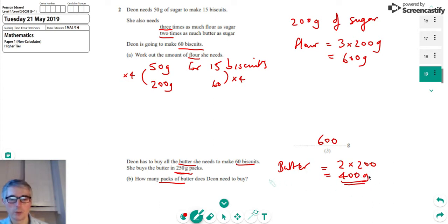Well, one pack would be 250, so that's not enough. We need more than that. So two packs, we can see, would be 500 grams, which would be enough. So the answer is two packs.